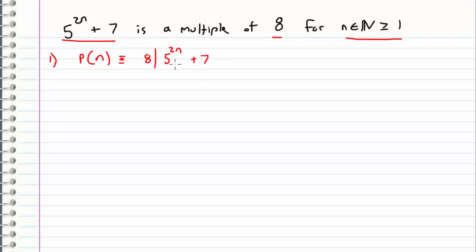So if 8 divides 5 to the 2n plus 7, then that is the same thing as saying that this is a multiple of 8. That is why I'm defining my statement like this.